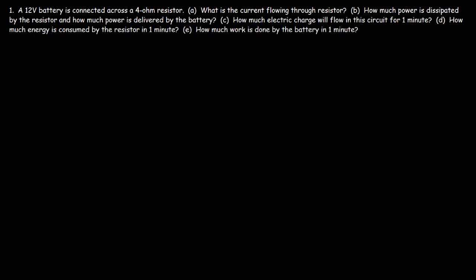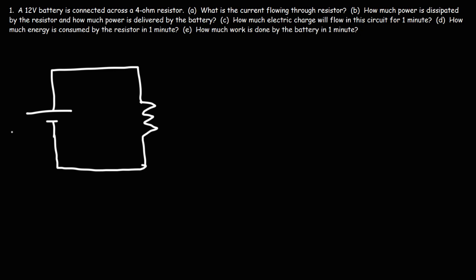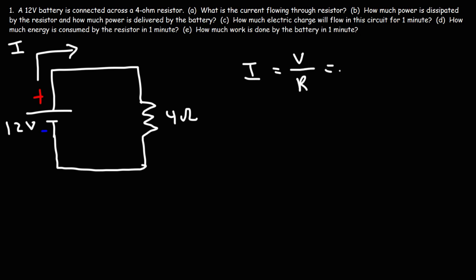Example: We have a 12-volt battery connected across a 4-ohm resistor. First, calculate the current: I = V ÷ R = 12 volts ÷ 4 ohms = 3 amps flowing in the circuit.